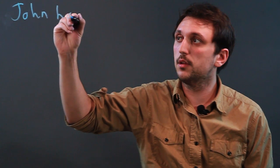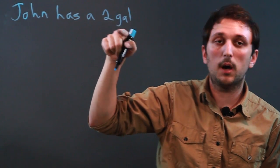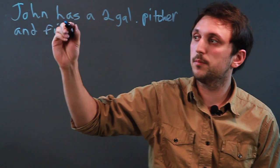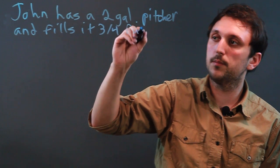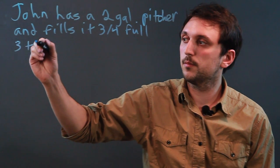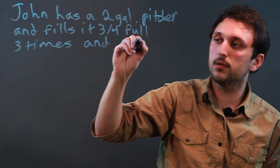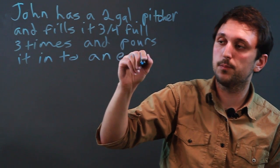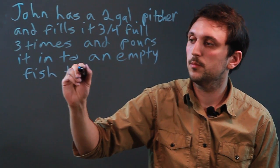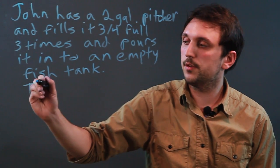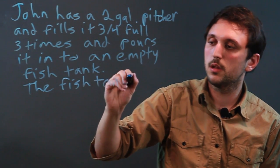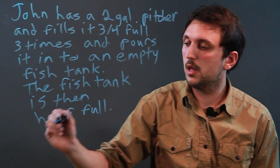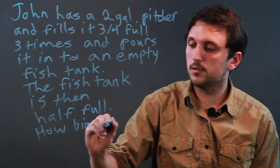John has a two gallon pitcher and fills it three-fourths full three times and pours it into an empty fish tank. The fish tank is then half full. How big is the fish tank?